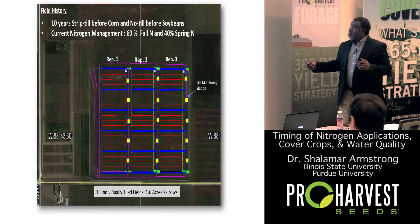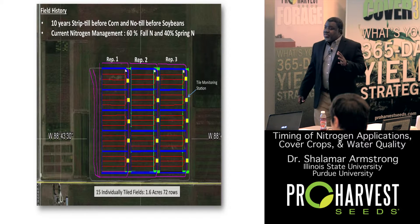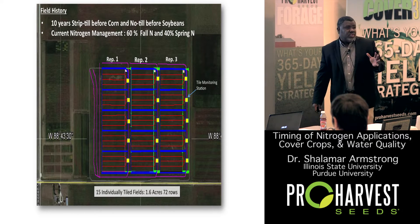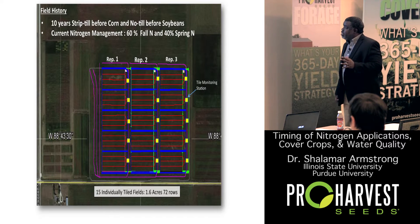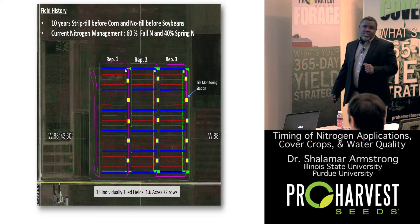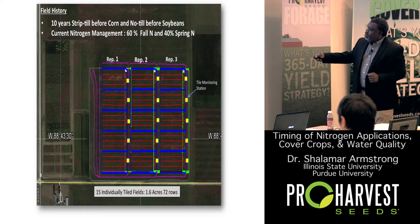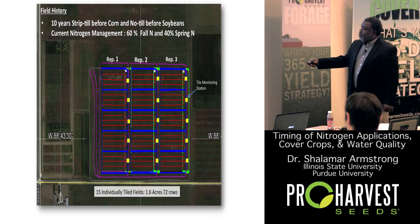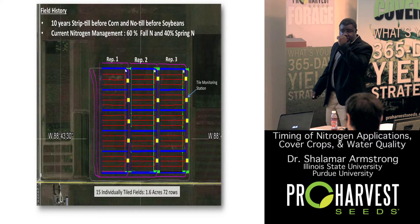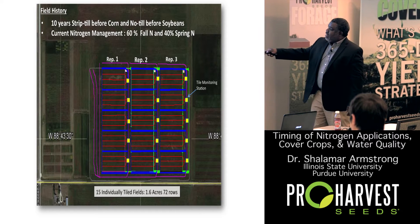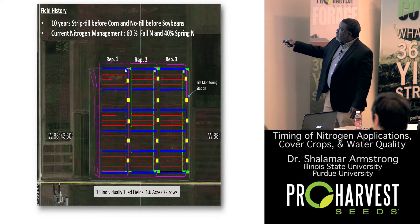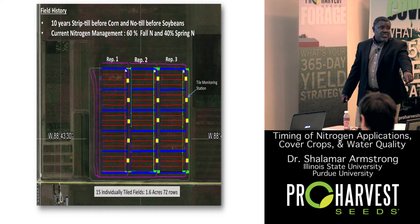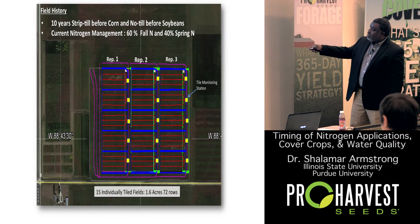Here's what the field looks like. This farmer was about eight to ten years of strip till before corn, no till before soybean - already doing a good soil conservation job. He was also 60% of his nitrogen in the fall, 40% in the spring. Each one of these blue boxes represents a field that's about 6.5 or 6.6 acres, which consists of about 72 rows of crops on 30-inch centers. These red lines represent tile laterals that are about 45 feet apart. Each one of those five treatments are replicated randomly three times throughout these 15 individually tiled plots.